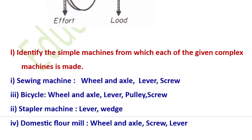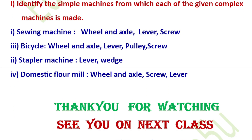Identify the simple machines from which each complex machine is made. A bicycle is made of wheel and axle, lever, pulley, and screw. A stapler is made of lever and wedge. A domestic floor mill is made of wheel and axle, screw, and lever. Thank you so much.